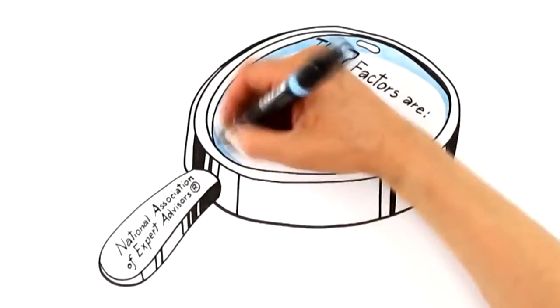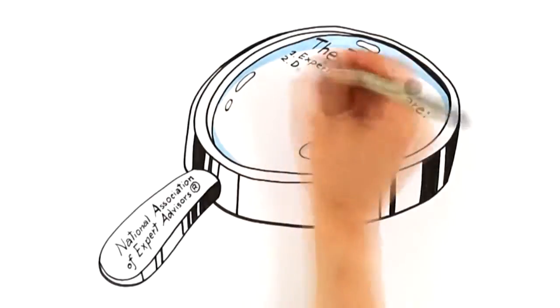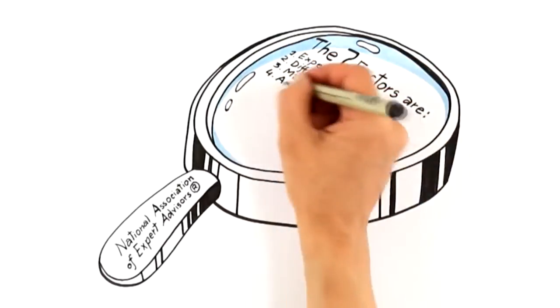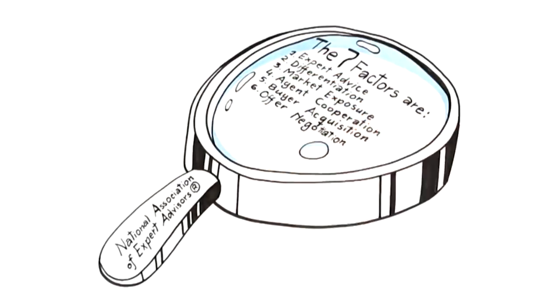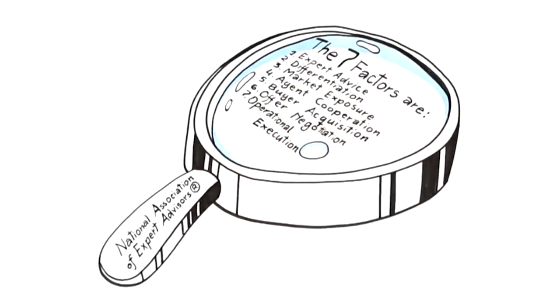The seven factors are: Expert Advice, Differentiation, Market Exposure, Agent Cooperation, Buyer Acquisition, Offer Negotiation, and Operational Execution.